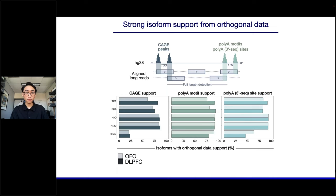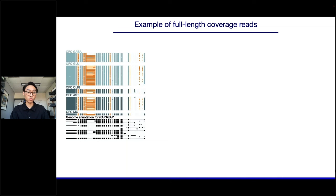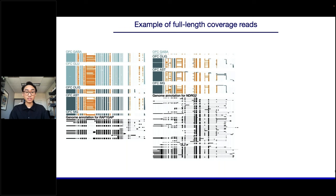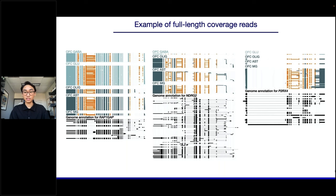Examples include the RAP1GAP gene, with isoforms enriched in all cell types shown to span fully from 5-prime to 3-prime end. The NDRG2 gene shows most isoforms mainly enriched in non-neuronal cell types rather than neuronal. P2RX4 is also mostly enriched in non-neuronal cell types, with a clear bias in microglia. Without even doing downstream analyses, cell type specificity at the isoform level is already visible.